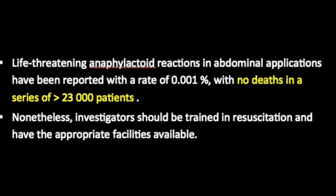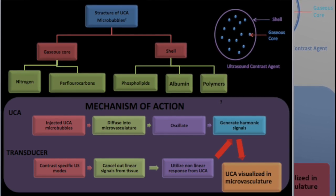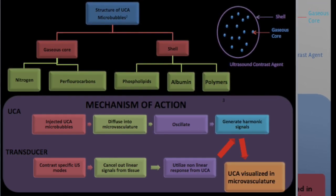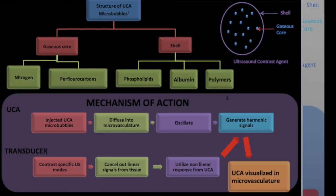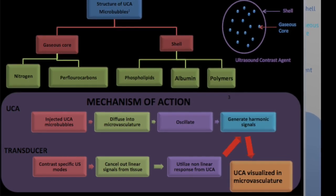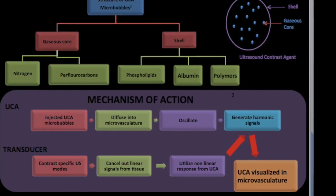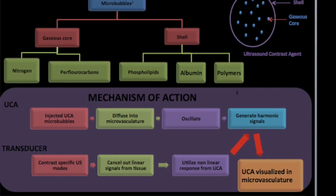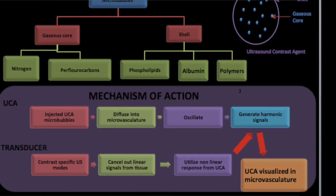Contrast agents are essentially gas bubbles covered by a stabilizing membrane, which can be made with phospholipids, albumin, polymer, or other materials. When we inject the contrast agents, they diffuse into the microvasculature and oscillate, generating harmonic signals. We use contrast-specific modes on ultrasound to pick up these harmonic signals — the non-linear responses from the contrast agent — allowing us to visualize these agents within the microvasculature.